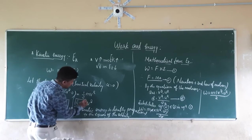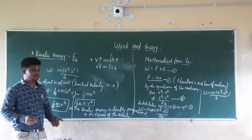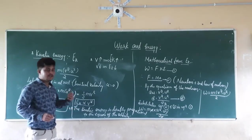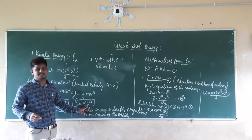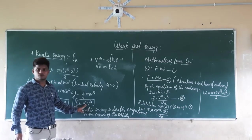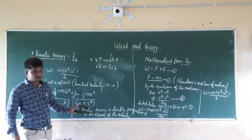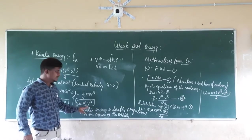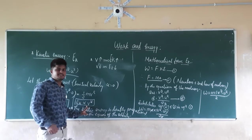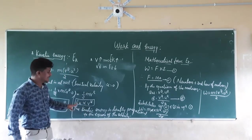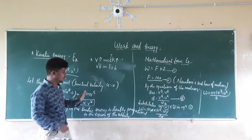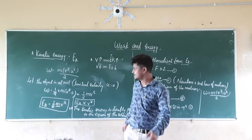Since Ek is directly proportional to v², if velocity is increased by 2 times, kinetic energy increases by 4 times (since 2² = 4). If velocity is increased by 3 times, kinetic energy increases by 9 times (since 3² = 9). If velocity is decreased to half, kinetic energy decreases to one-quarter (since (½)² = ¼).